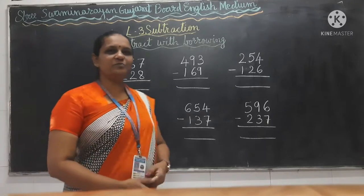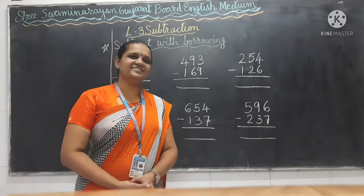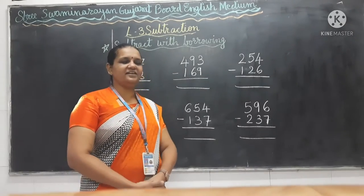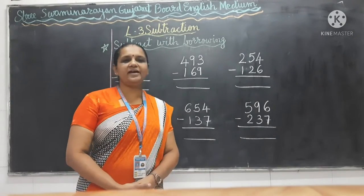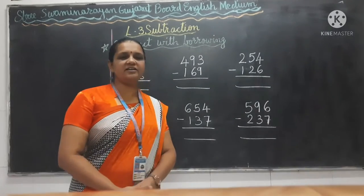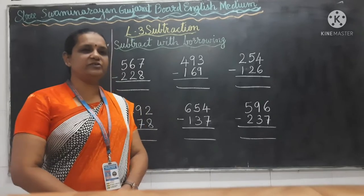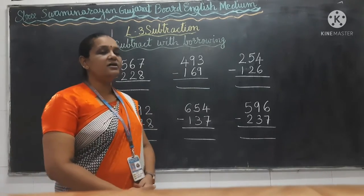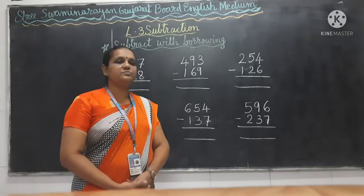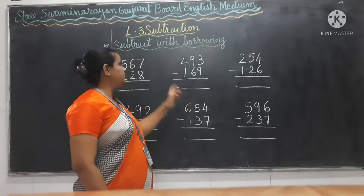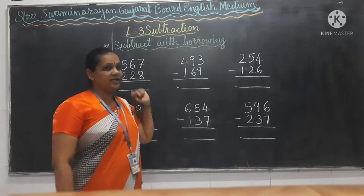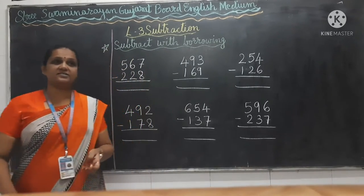Good morning students, Jai Swaminathan. Today we have subtraction — again we will do subtraction with borrowing, with 3 digits. 3-digit subtraction is started.